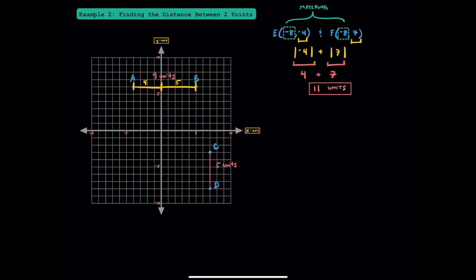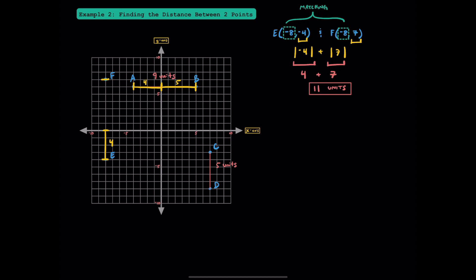Let's confirm this on a coordinate plane. After plotting points E and F, we can see that they are 1, 2, 3, 4, 5, 6, 7, 8, 9, 10, and 11 units apart. A smarter strategy is to find the distance E is from 0, which is 4 units, and the distance of F from 0, which is 7 units. That's why we add their absolute values — 7 plus 4 — to get 11 total units apart.